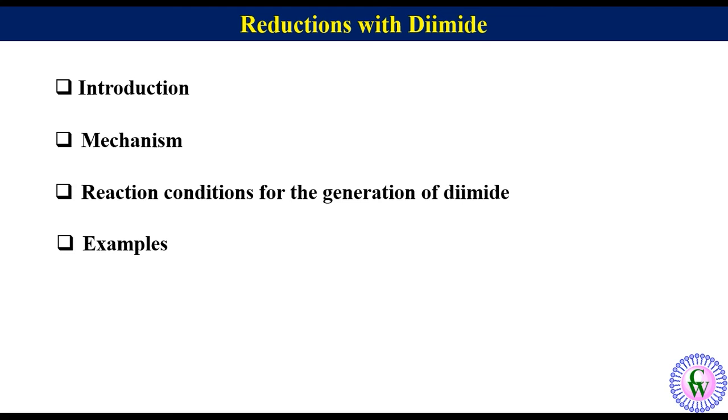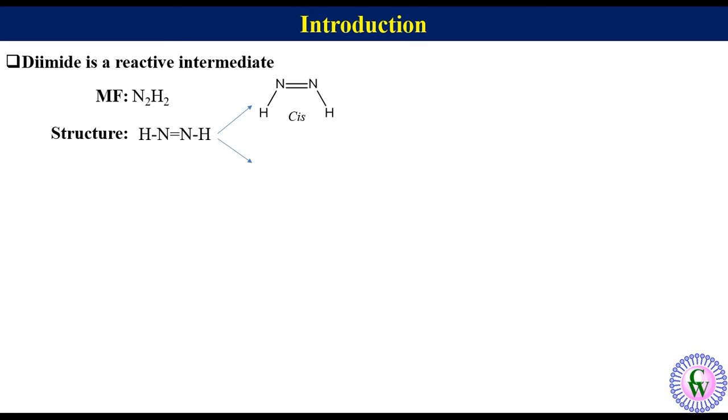Let's start with the introduction. Diimide is a reactive intermediate with the molecular formula N2H2. The structure of Diimide can be written as HN double bond NH. There are two isomers, cis and trans.